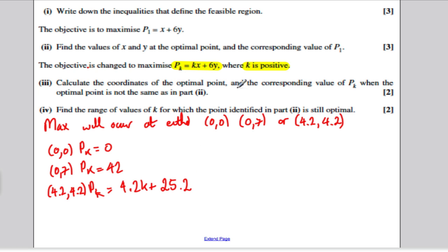It says calculate the coordinates of the optimal point when the optimal point is not the same as in part 2. So when it's not the same as in part 2, this could be the optimal point depending on the value of K. It asks us in the last part to work out the values of K for which the point in part 2 is still optimal. So for the coordinates 4.2, 4.2 to be the optimal, this thing here has to be bigger than 42. Otherwise, that one would be the optimal solution. Conversely, this is the optimal solution as long as it's bigger than this.